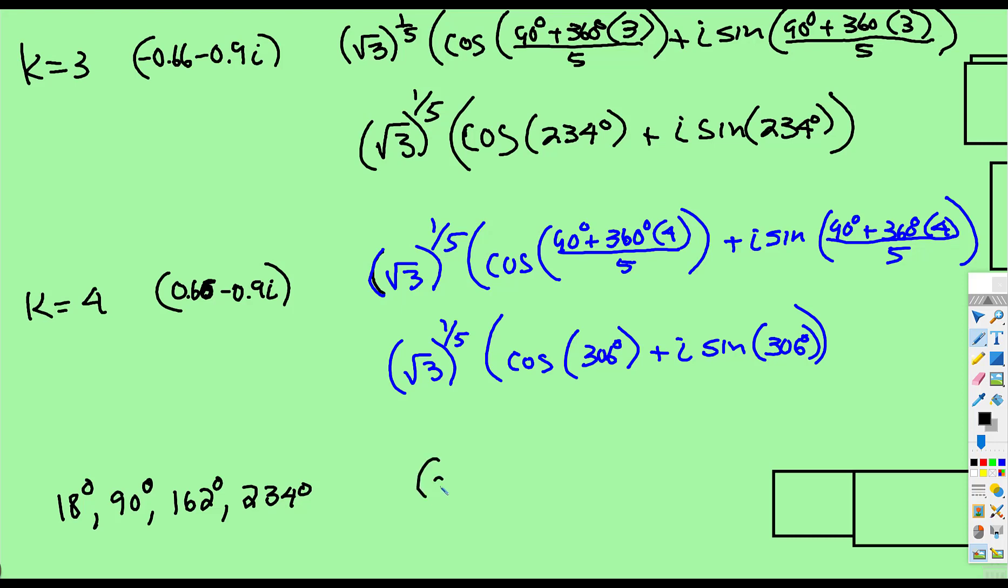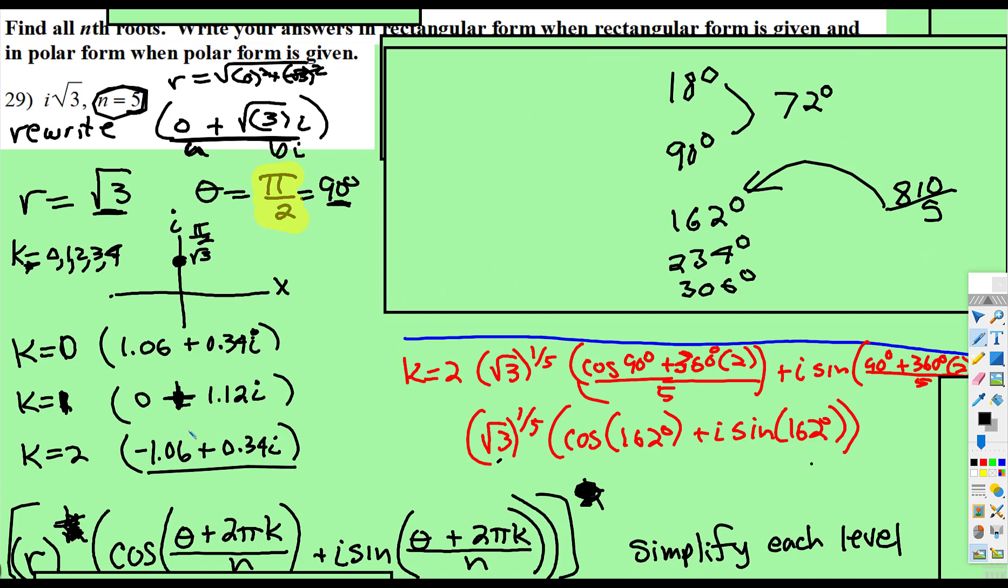All right, so we took an a + bi, we converted it to r cosine θ plus i sine θ. And then we applied De Moivre's theorem. And once we did that, we multiplied each piece out to get our 5 roots. So there's our k = 4, there are our 5 roots. All right, that's it. This is a long one, sorry about that.